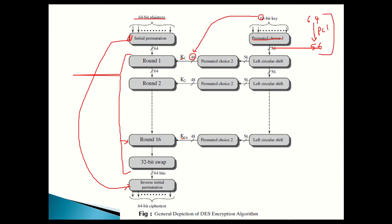PC1 is a one-time operation. After that, for each round, we take the 56-bit key and perform a left shift. A left shift means you take the leftmost bit and place it at the right end, like a circular rotation — for example, 1010 becomes 0101. After the left shift, the 56-bit key is then reduced to 48 bits using PC2, Permutation Choice 2.